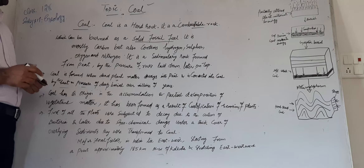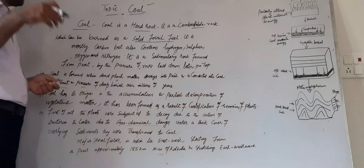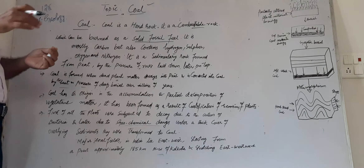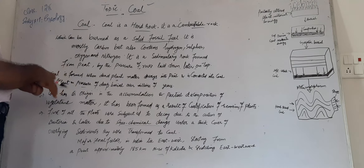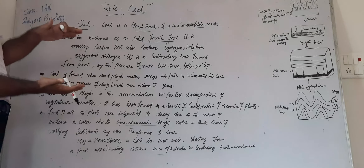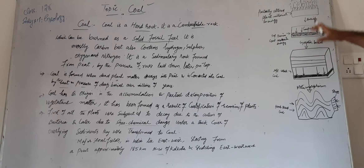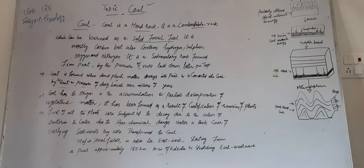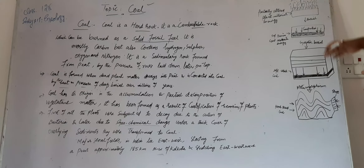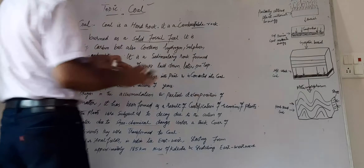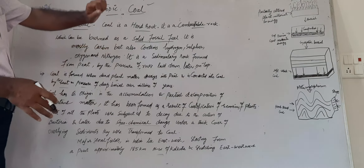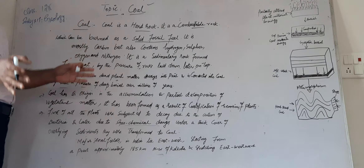First, the plants were subject to decay due to the action of bacteria, and later due to geochemical changes — chemical changes happening under the surface of the earth, under a thick cover of overlying sediments. When these overlying sediments lay down pressure on the vegetative cover below the sedimentary layers, this thick cover transforms the material.